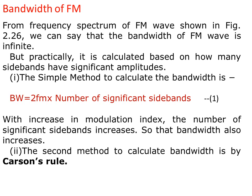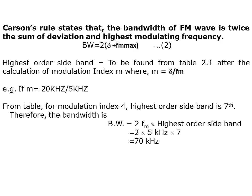The second method to calculate bandwidth is by Carson's Rule, which states that the bandwidth of the FM wave is twice the sum of the deviation and the highest modulating frequency. Applying this formula, we can find out the bandwidth of the signal. The highest order sideband is found from table 2.1 after calculating the modulation index M, where M equals Δf over F_M. For example, from the table, at modulation index 4 the highest order sideband is 7, therefore the bandwidth will be equal to 70 kHz.